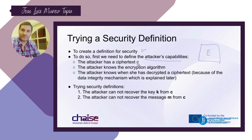We assume that the attacker has a ciphertext — the attacker might be on the internet, and when the cryptogram is passing through, they can capture it. As noted, the attacker knows the encryption algorithm. We also assume that the attacker knows when they have correctly decrypted a cryptogram. Obviously, the key is not known by the attacker. These are the assumptions.